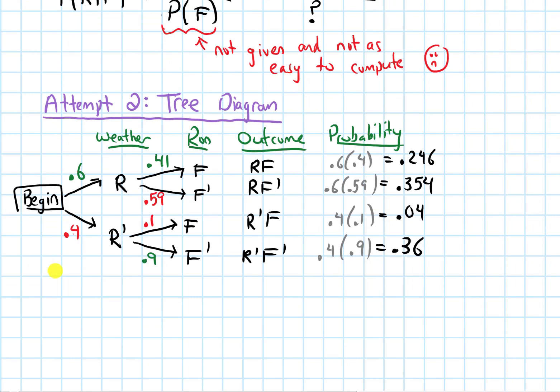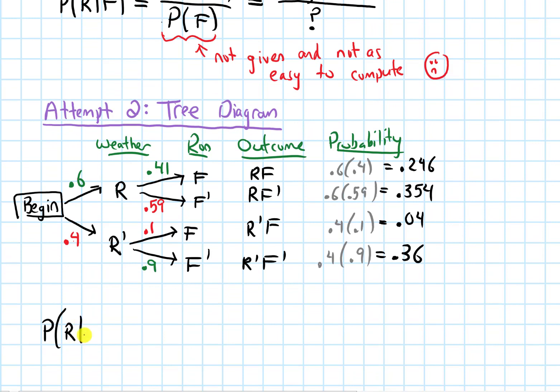We've got our tree diagram, and we wanted the probability of R, given that F occurs, which is the probability of R intersected with F on the top, probability of F on the bottom.